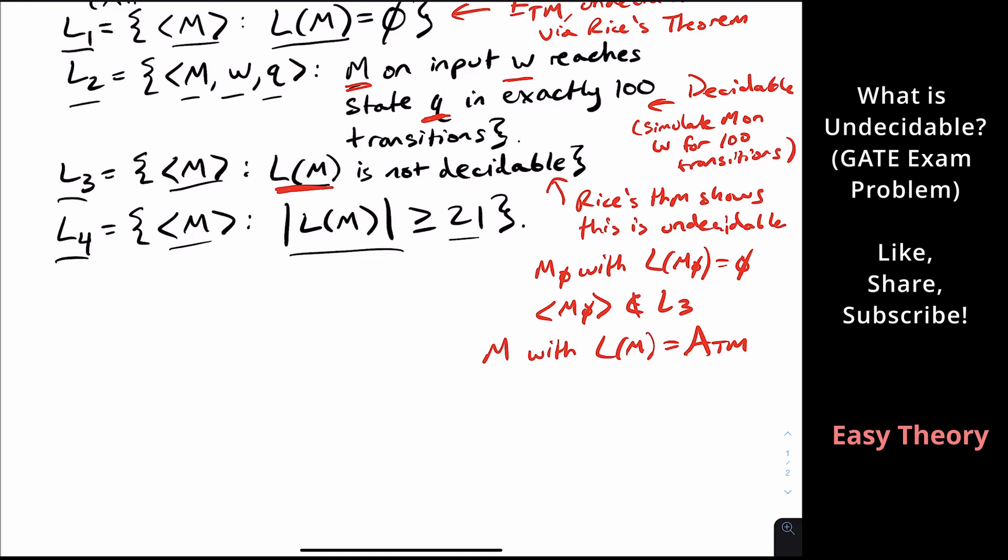So let's have a machine m with the language of that machine being ATM. And you may say, okay, well, that's not possible because ATM is undecidable. Yes, but it's recognizable. So therefore, I can still make a machine that has that language. That's all that matters.